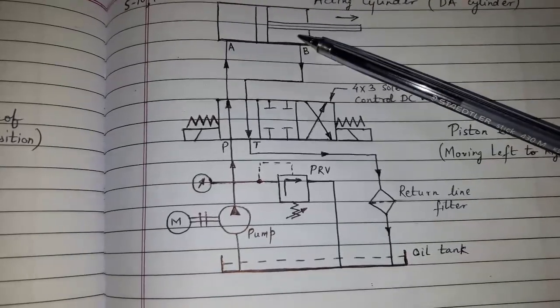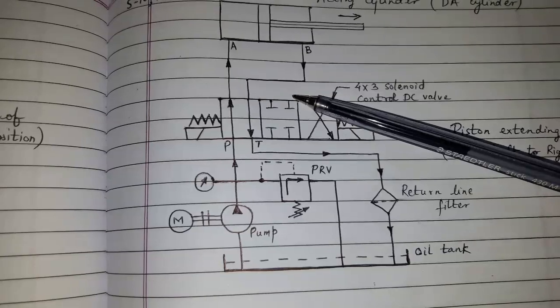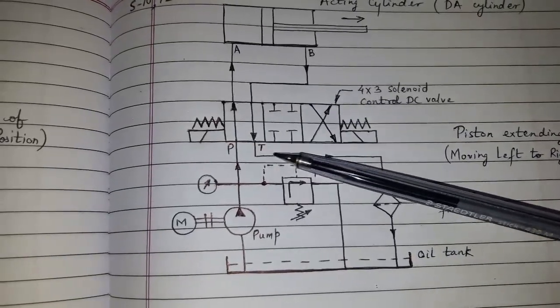During this movement, oil on the other side of the piston, that is the piston rod side, will automatically return to the oil tank via DC valve.